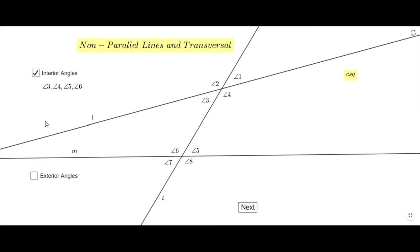Now we have another box here which is going to show us the exterior angles. If in your mind you already know that the exterior angles are one, two, seven, and eight — that would be correct. Angles one, two, seven, and eight are called exterior angles because they are not between L and M; they are outside.